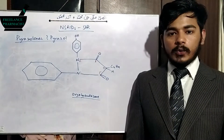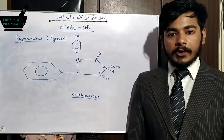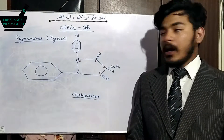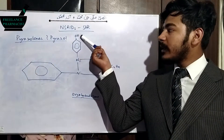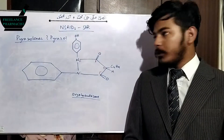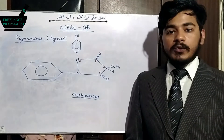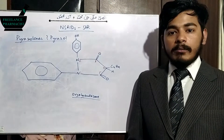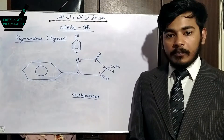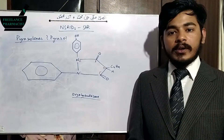The next drug of pyrazolodione is oxyphenbutazone. There is only one difference between oxyphenbutazone and phenylbutazone: in phenylbutazone a phenyl substitution was present, but in oxyphenbutazone a phenolic substitution is present — that is, only a hydroxyl group has been added to the phenyl ring. You can also say that oxyphenbutazone is an active metabolite produced during phase 1 metabolism of phenylbutazone as a result of aromatic oxidation.